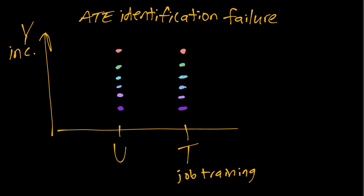We can see by construction in this example, the true ATE and actually even more strongly the true treatment effect for each individual is zero. In other words, YT minus YU equals zero for everyone, which also implies the average treatment effect is also zero.